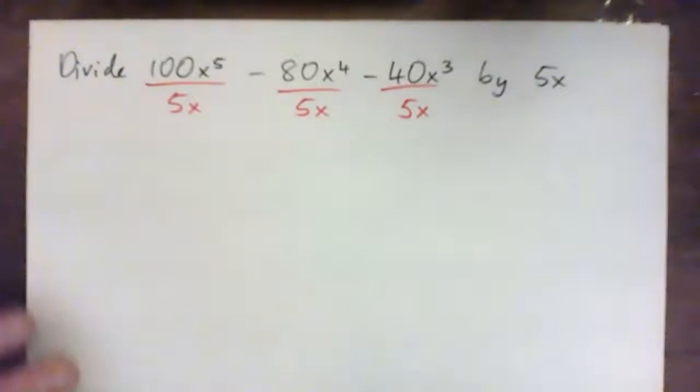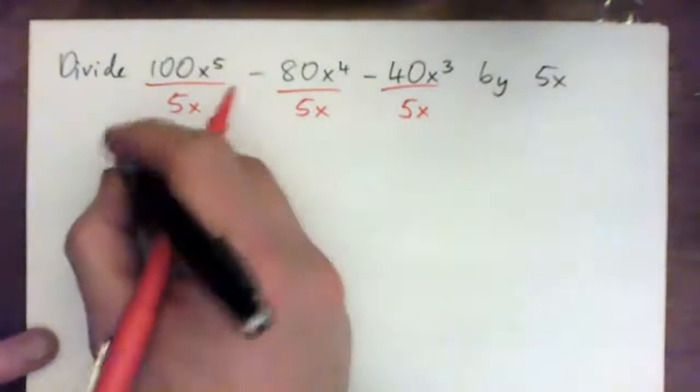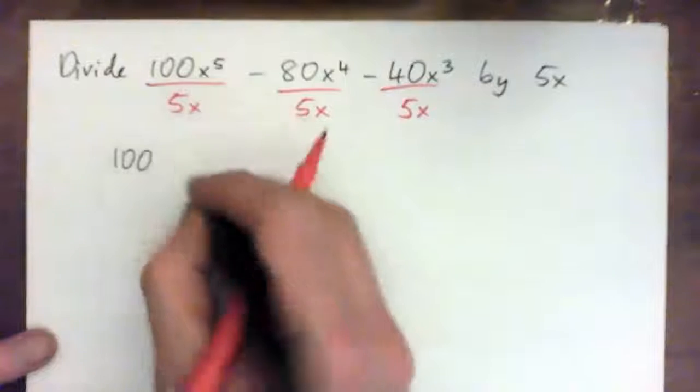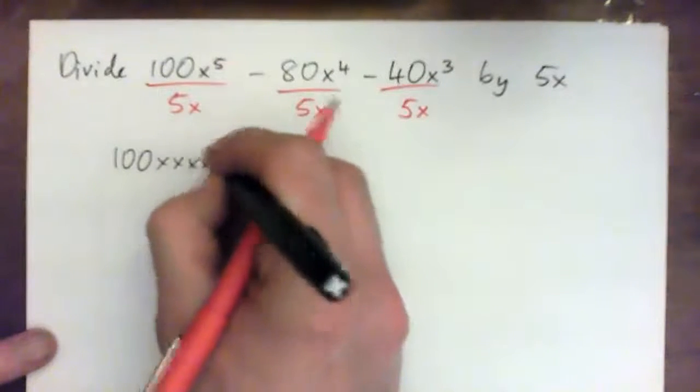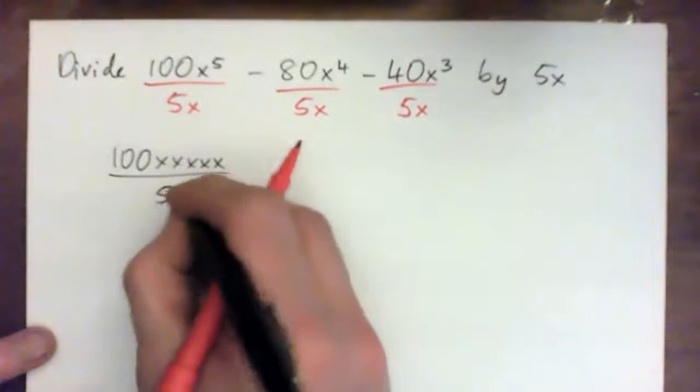And what I'd like you all to do, just to make sure we don't make a mistake, because math is cruel and if you make one mistake, you're wrong. Just take that x to the 5 and just go 1, 2, 3, 4, 5, just like that, all over 5x.